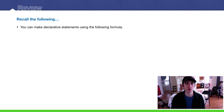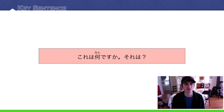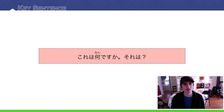Just a quick review. This is how we make declarative sentences in Japanese: A は B です. Key sentence: これは何ですか？それは？